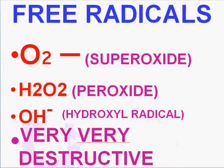Let's talk about free radicals. Free radicals are extremely destructive things that can be produced from toxins, radiation, or even viruses. They result in ions without partners — like superoxide, peroxide, or the hydroxyl radical. These are either a cause of damage and acute inflammation, or sometimes part of the whole inflammatory process.